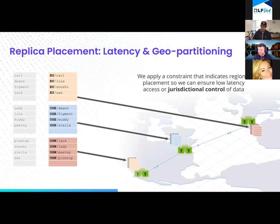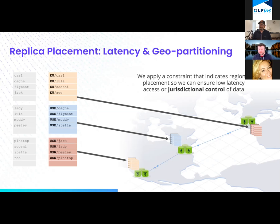Ultimately, CockroachDB was designed around two primitives. Number one is consistency of data — we've implemented a database that is a true system of record with serializable isolation, so data is guaranteed correct. This isn't eventually consistent — what you read is what you're going to get. There's a lot we had to do in distributed systems to deal with that — there are challenges from the CAP theorem, and there have been a couple of questions about that.